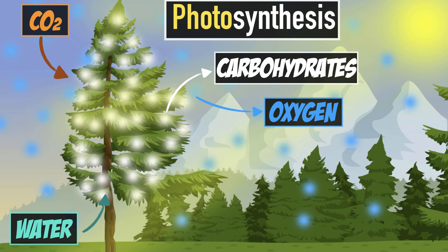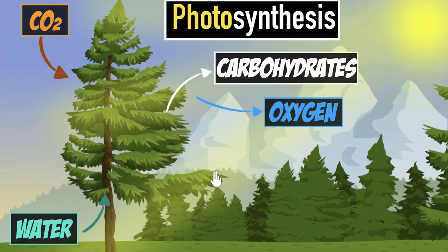Let's start with the first question: what do plants and trees have that we don't? It turns out they have something called chlorophyll. To answer that, let's clear this up and look at one of these leaves very carefully.